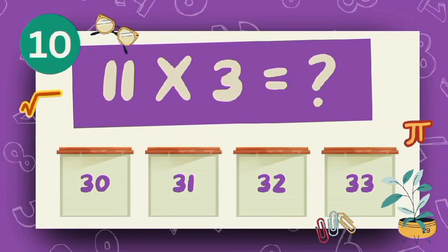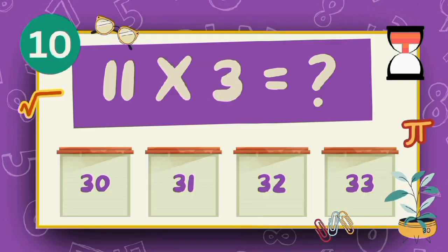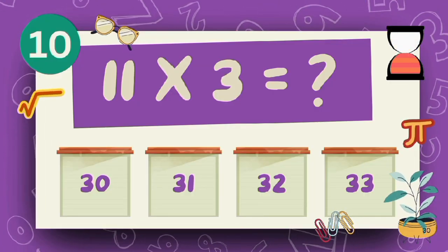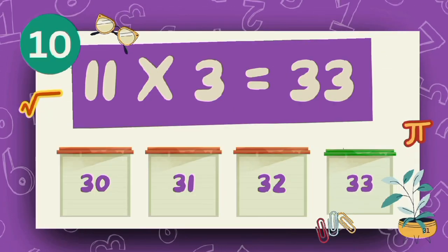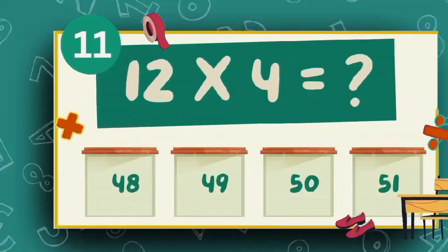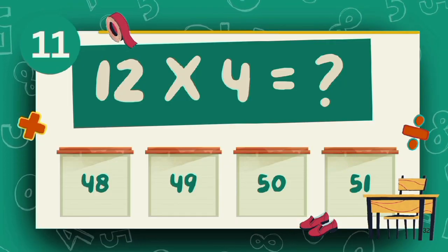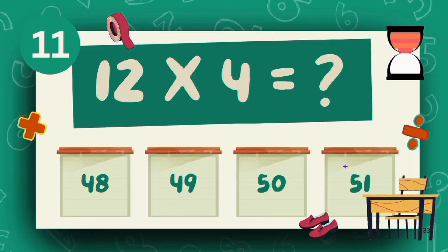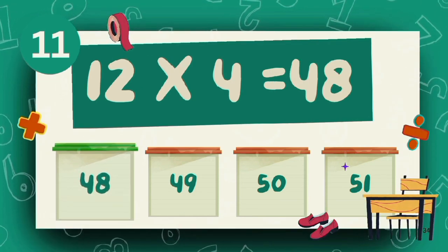What is 11 multiply 3? The answer is 13.